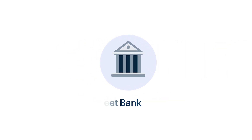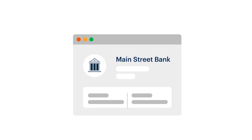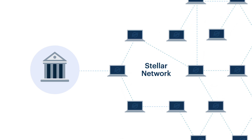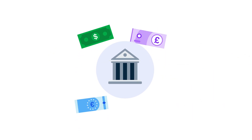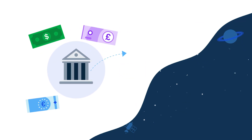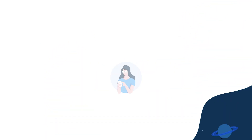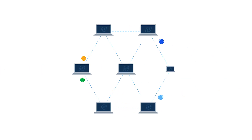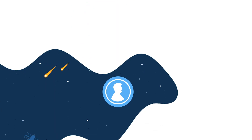First up, the bank. This is Mainstreet Bank. To use the Stellar network, Mainstreet Bank sets up a Stellar account. Then, using Stellar's built-in tools, the bank hooks its existing infrastructure into the Stellar network. Now the bank can take its real-world assets, like dollars, euros, or pounds, and turn them into Stellar tokens. And their customers can deposit a US dollar in Mainstreet Bank and get a US dollar token on Stellar in return. All Stellar tokens are exchangeable.